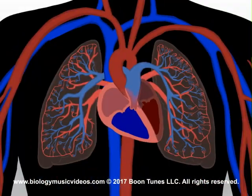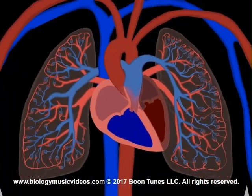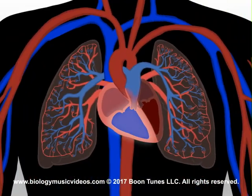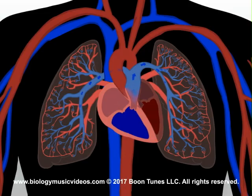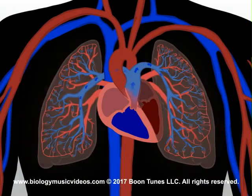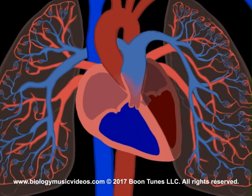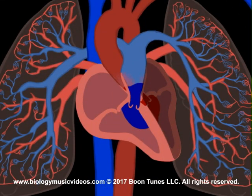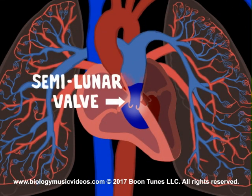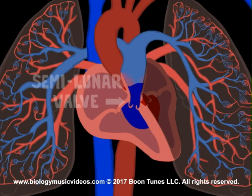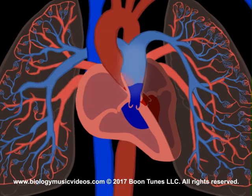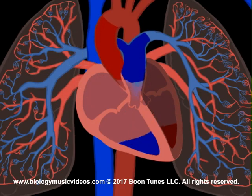The pulmonary circulation starts in the right ventricle of the heart. Now let's see how the blood moves from the right ventricle to each lung. As blood leaves the ventricle, it flows through the semilunar valve which opens to the pulmonary trunk, which splits.